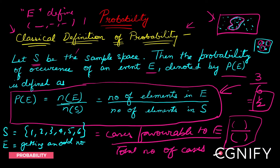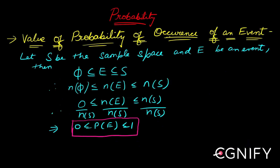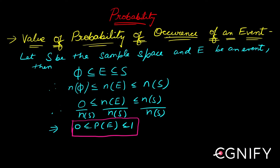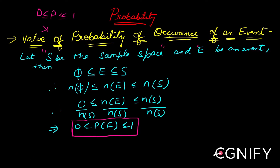So the probability of getting an odd number is 1/2. This was a very basic example to understand how to apply this definition — you may have seen this in Class 10 as well, but it's worth repeating. With this done, let's move on to the next subtopic: proving that the probability of any event lies between 0 and 1.